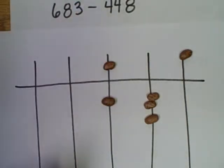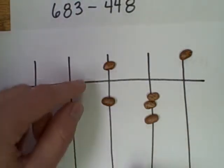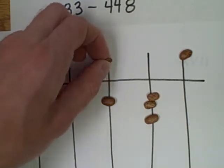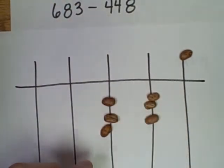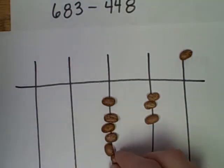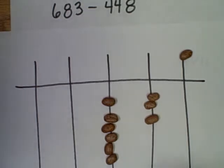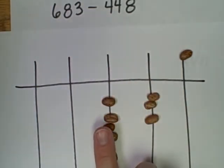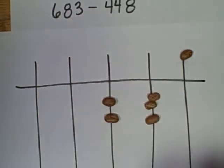Finally I need to take away 400. I only have 100 here. Here's a 500. I'll exchange for one, two, three, four, and five. And now I'll remove 400. So the difference is 235.